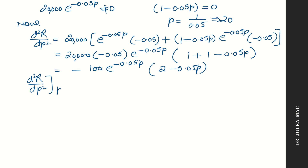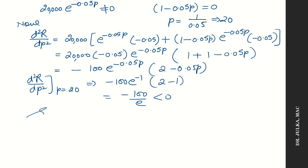Put p equals to 20 in the second derivative. We get minus 100 divided by e, which is negative. So maximum revenue occurs at p equals to 20.